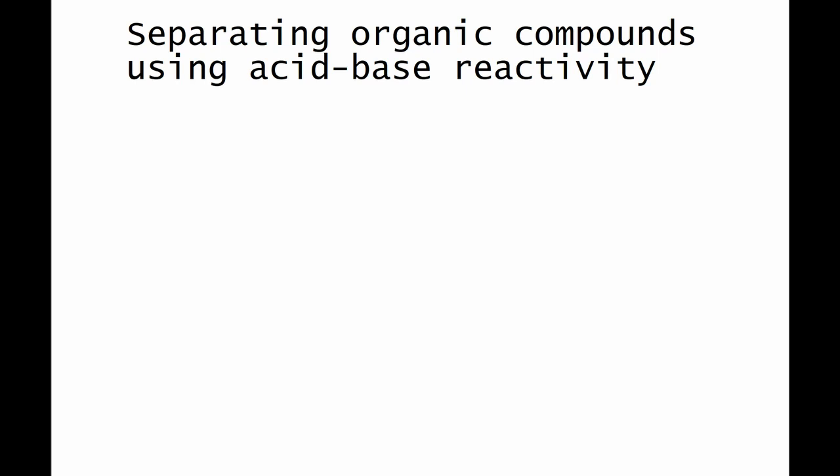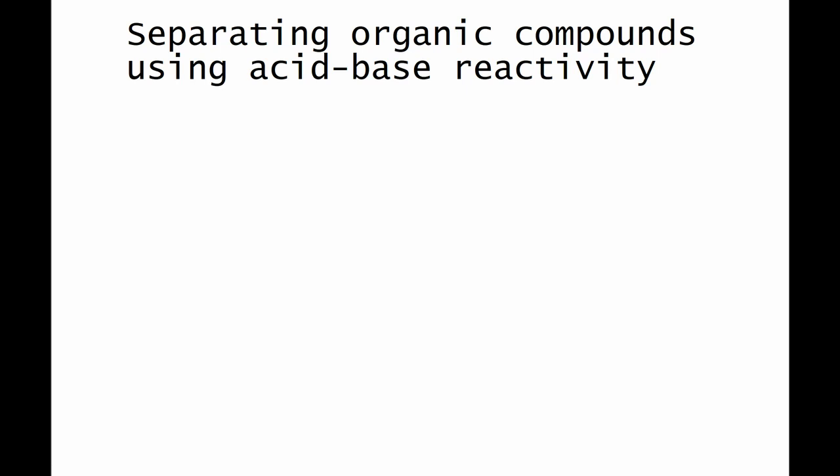Hello everyone, Astral Chemistry here. In one of our last videos, we explained how capsaicin could be purified and obtained in a reasonably pure form from an extract of chili peppers. So of course that was a special case of separating an organic compound using acid-base reactivity. Now, we would like to give you a more general outlook and explanation of how separating organic compounds using their acid-base reactivity can be easily accomplished in the laboratory.